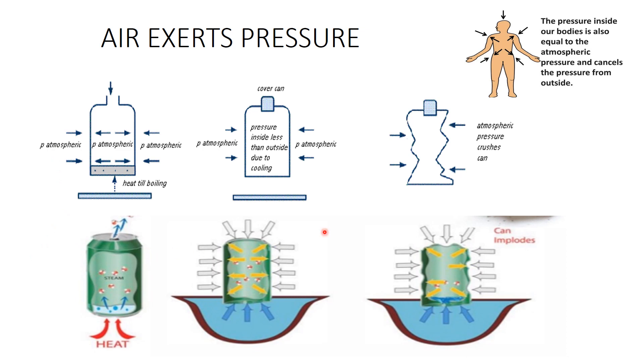Students, the activity here shows that air exerts pressure. Students, in nature, pressure wants to be balanced. The imbalance in pressure can cause things to get crushed or collapse like this tin can. Students, our bodies can also get crushed if the pressure is not balanced. The pressure inside our bodies is equal to the atmospheric pressure outside our body, meaning there is no overall force on you and you do not get crushed. Let's understand this in a much better way by discussing this activity.